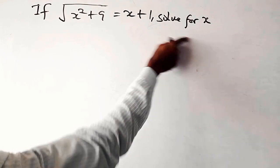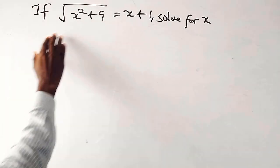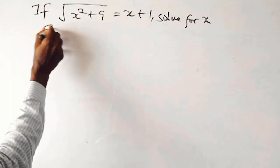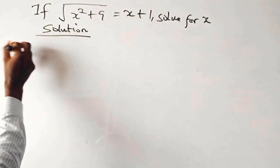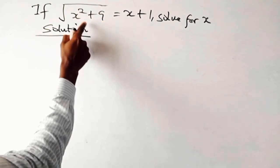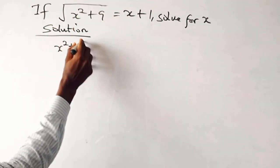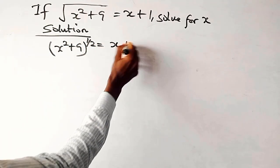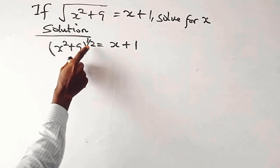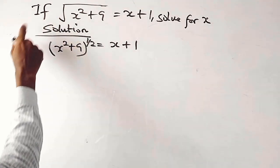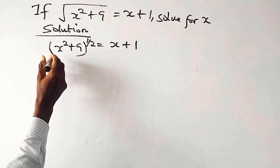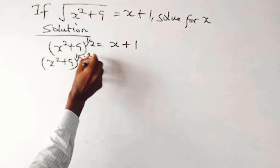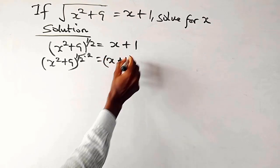Now we have a quadratic equation involving a radical: square root of x squared plus 9 equals x plus 1. This is x squared plus 9 to the power of one half, equals x plus 1. To take care of this radical, we square both sides, giving us x squared plus 9 to the power of 2 times one half equals x plus 1 squared.